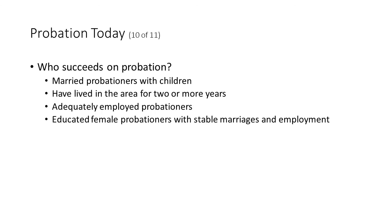Who succeeds on probation? Generally, those who are married with children, those who have lived in the area for two or more years, adequately employed probationers, and educated female probationers with stable marriages and employment. Common crimes for these more stable individuals include DWI, drug use, domestic violence, identity theft, and petty theft.